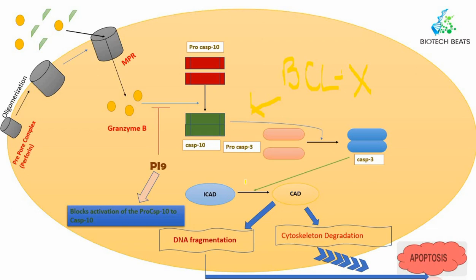In summary, we have learned how granzyme and perforin lead to apoptosis. This mechanism occurs in cancer cells or virus-infected cells. The perforin oligomerization is carried out by the MACPF domain present in the perforin domain structure. This is the third mechanism of apoptosis we have discussed. In the next video we will cover aging and necroptosis. Please like, share, subscribe, and press the bell icon for the latest updates.